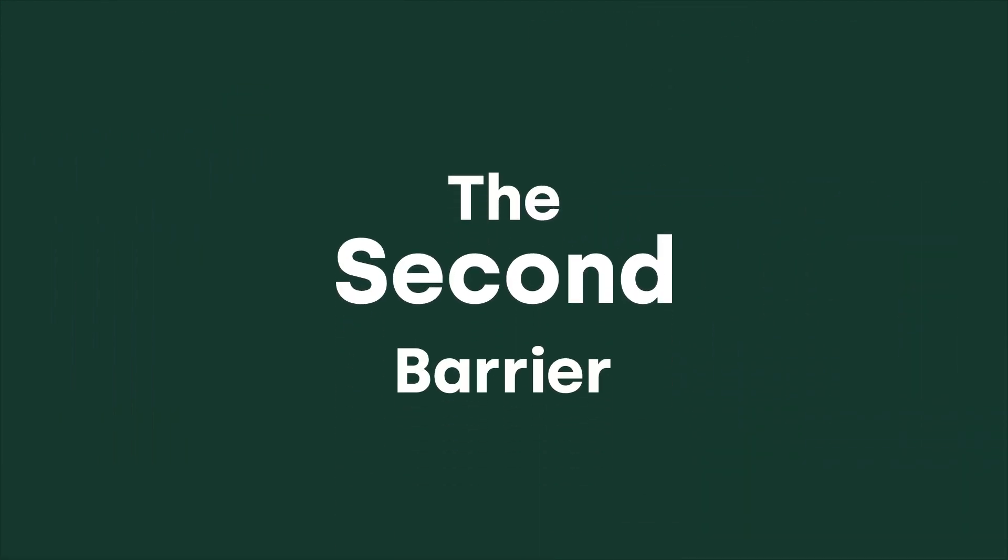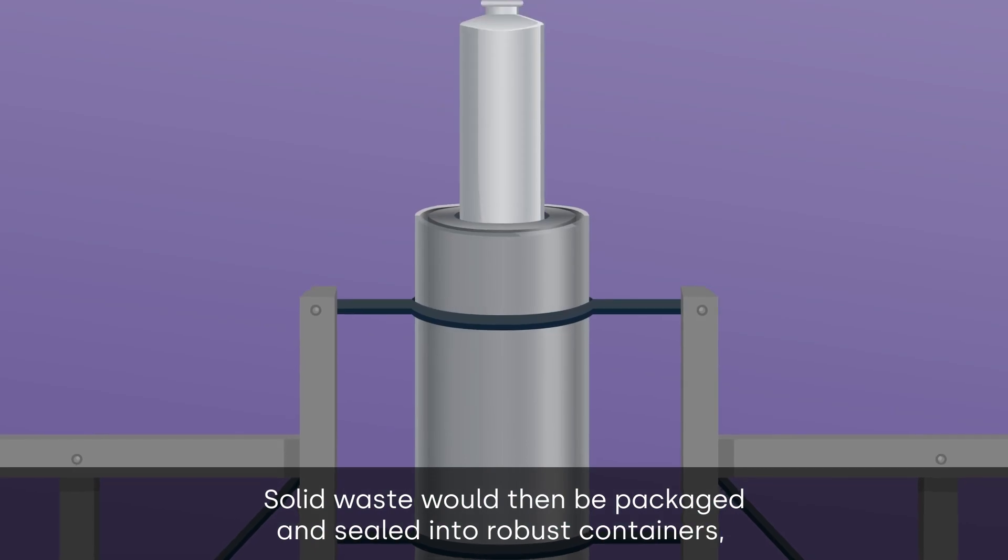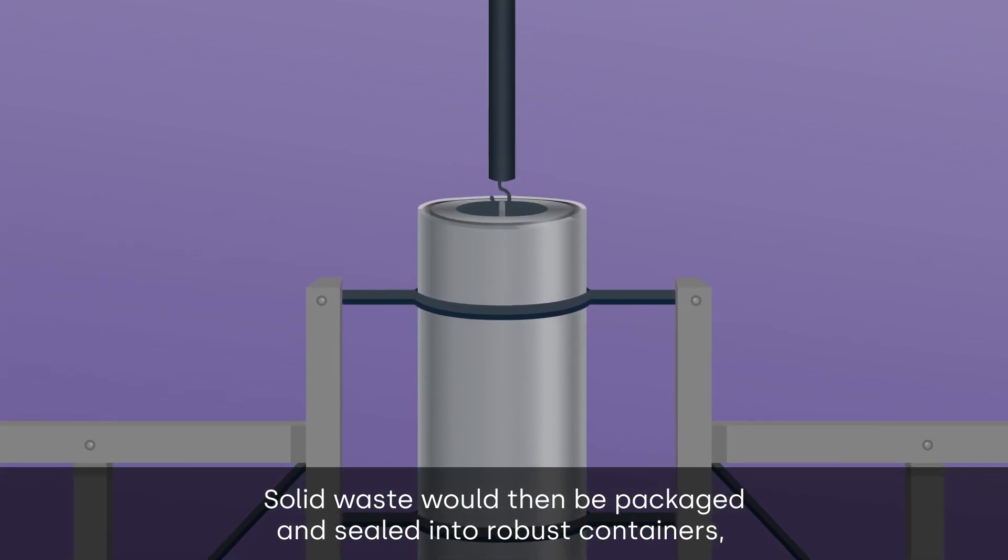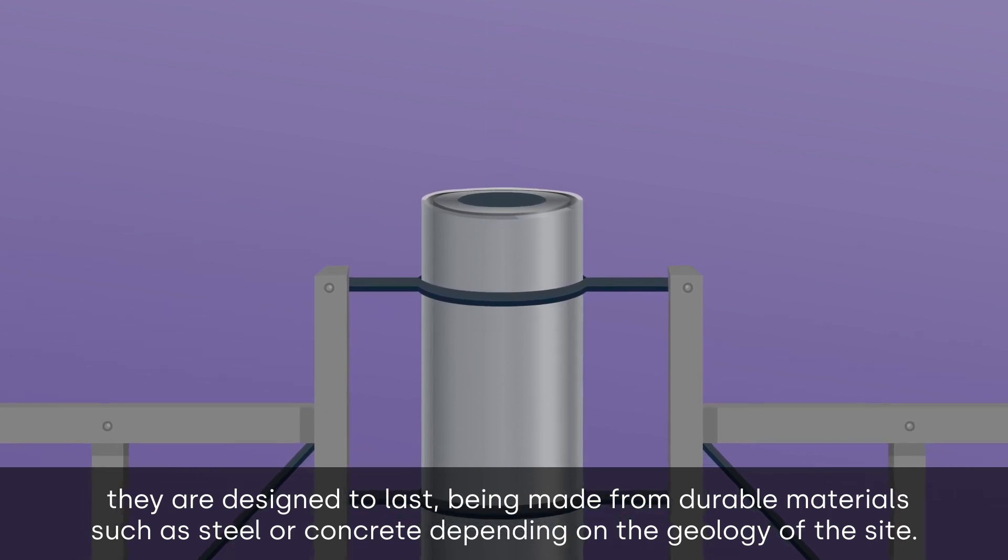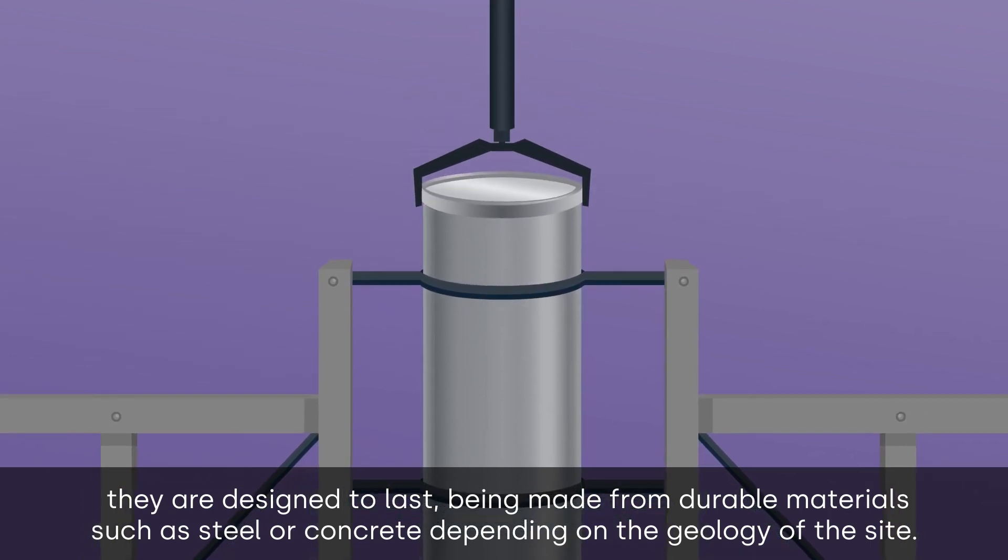The second barrier: solid waste would then be packaged and sealed into robust containers. They are designed to last, being made from durable materials such as steel or concrete, depending on the geology of the site.